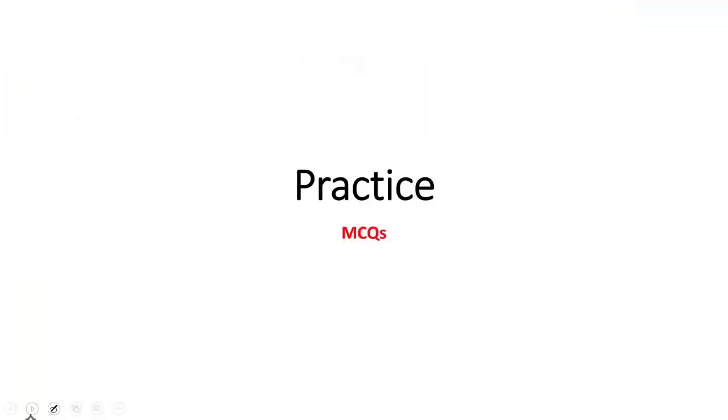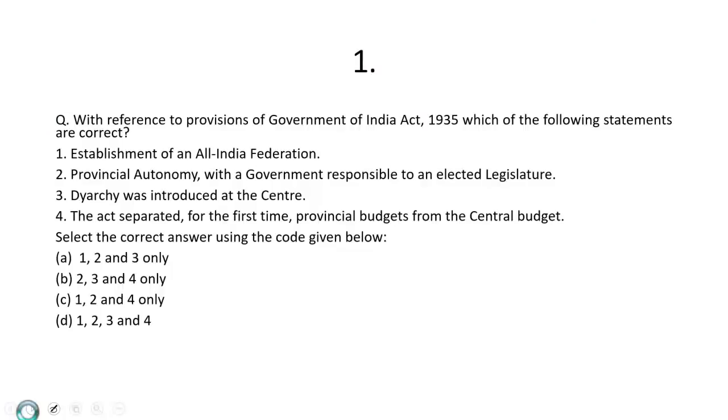Now let's look at the practice questions first for prelims and then for mains. With reference to provisions of Government of India Act 1935, which of the following statements are correct? Establishment of an All India Federation? Correct. Provincial autonomy with a government responsible to an elected legislature? Correct. Diarchy was introduced at the center? Correct. The Act separated, for the first time, provincial budgets from the central budget? No. This was done in 1919. So which of the above statements are correct? 1, 2 and 3. A only. A is the correct answer.